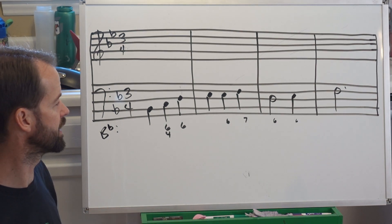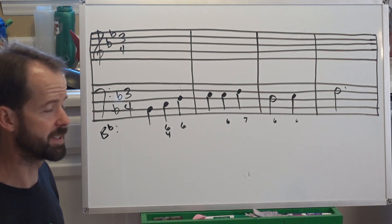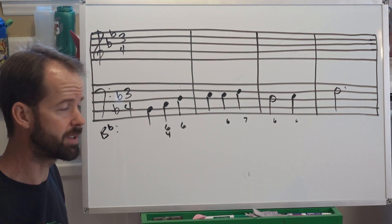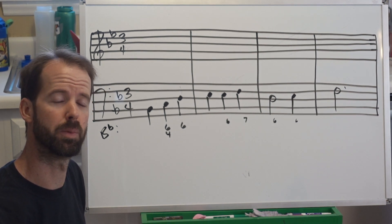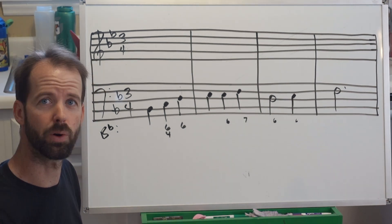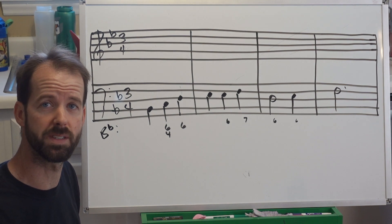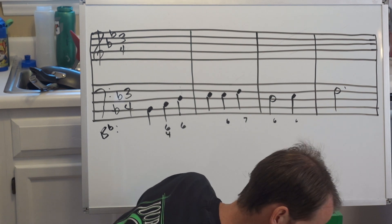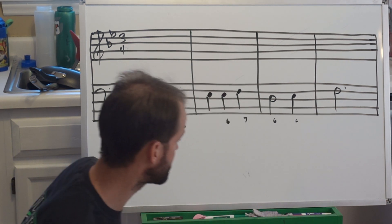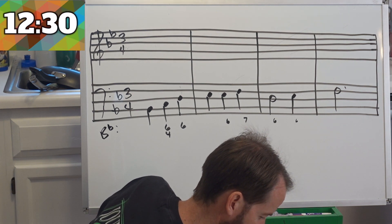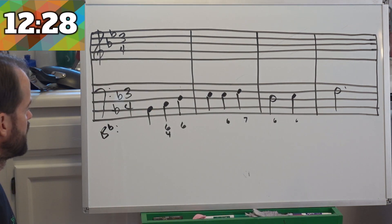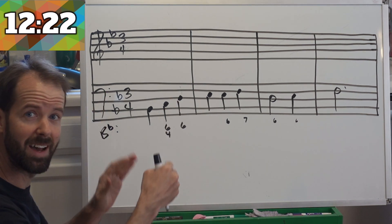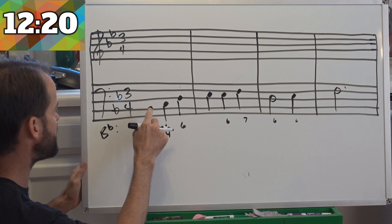Here we have an example in B-flat major. It's in 3-4 time. There's four measures and you have the bass notes already given to you and below you have the figures or those inversion symbols prepared. So we're going to create the other three voices: soprano, alto, tenor and bass, starting with the soprano. My timer is set to 12 and a half minutes and it's going to begin right now.